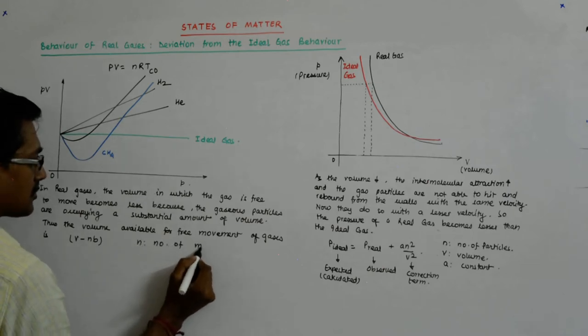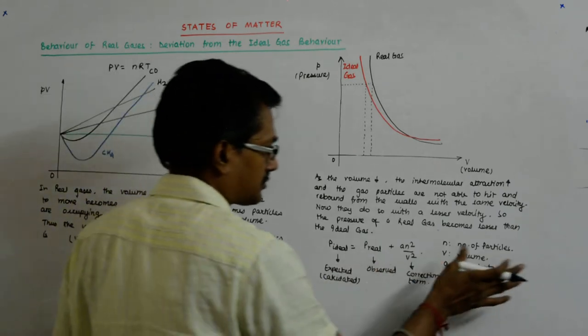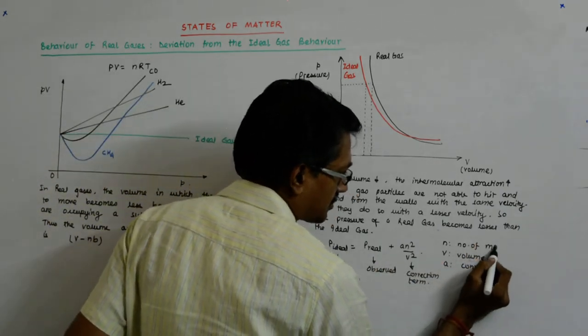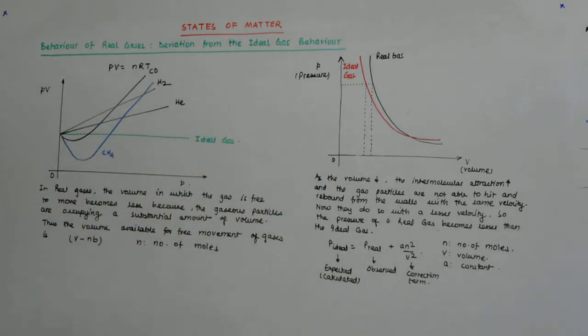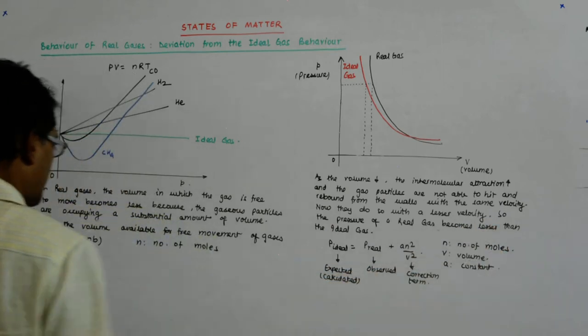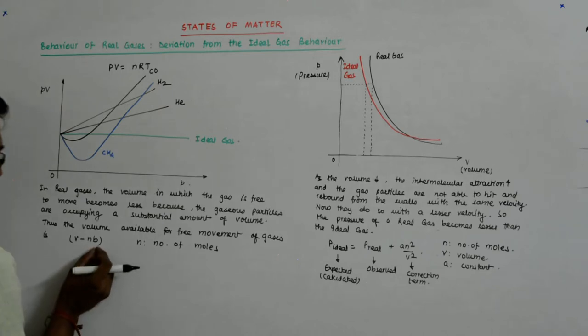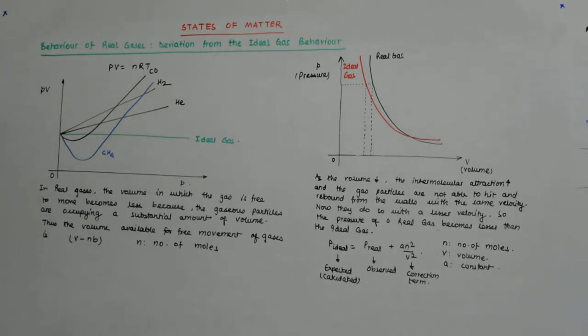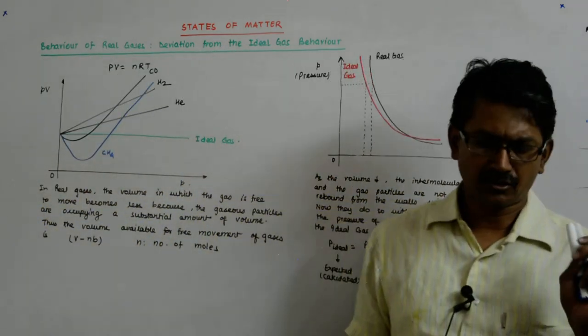Hold on, I'm sorry, this is number of moles. B is again a constant, right? B is a constant that gets multiplied by this and it'll tell you by how much it will change. So that will depend on the size of the gaseous particle. So that's why it is a constant that varies with the gases.